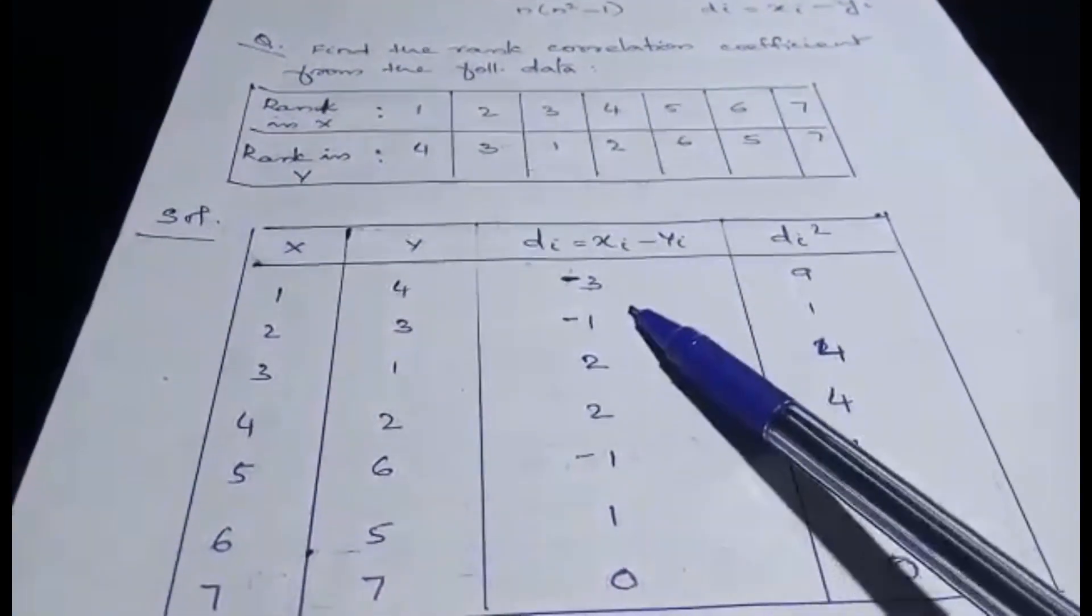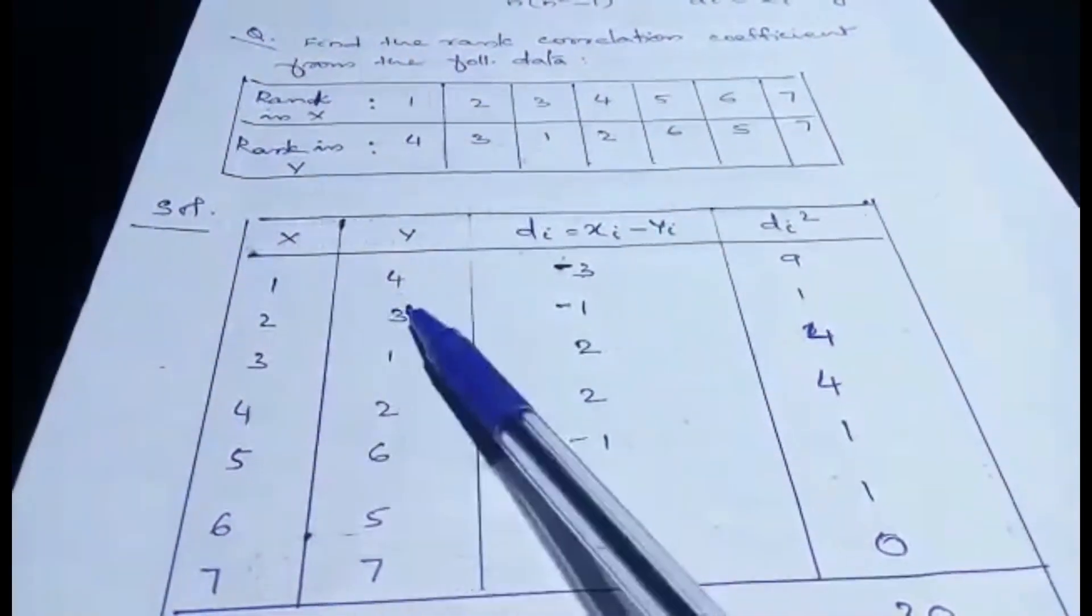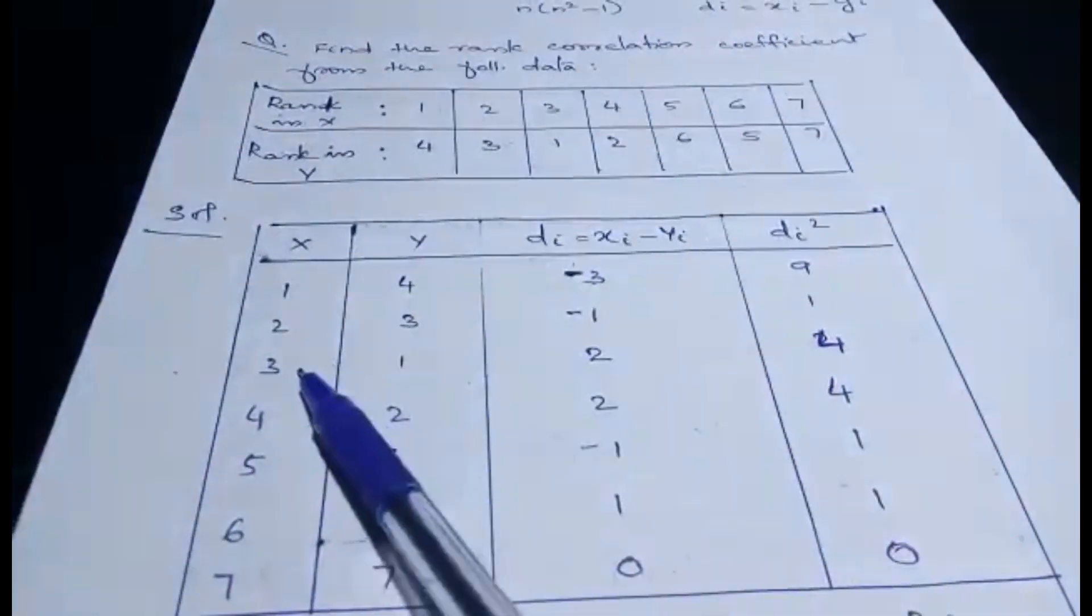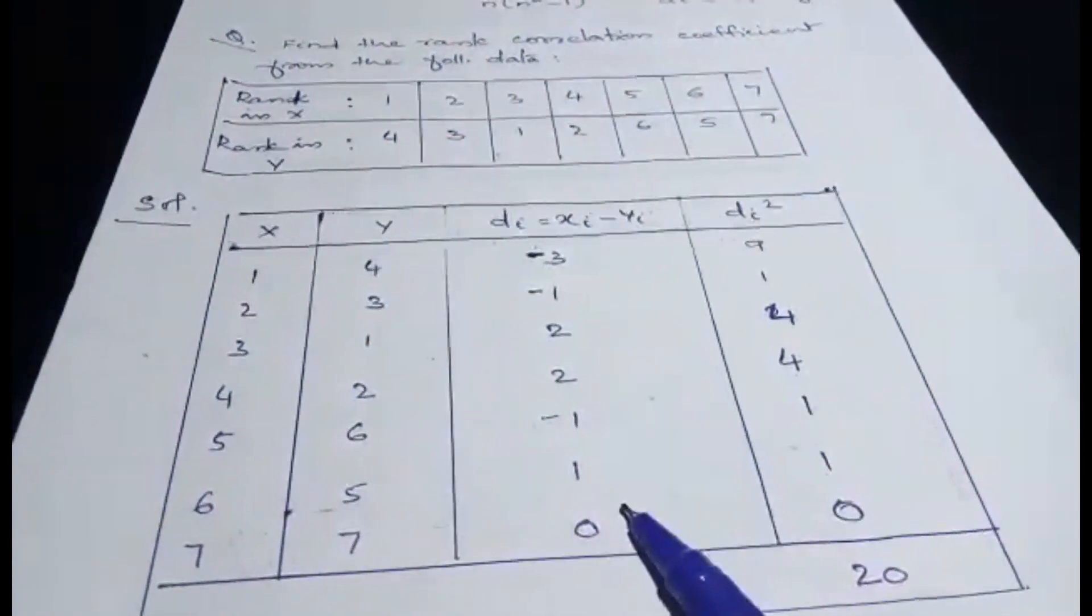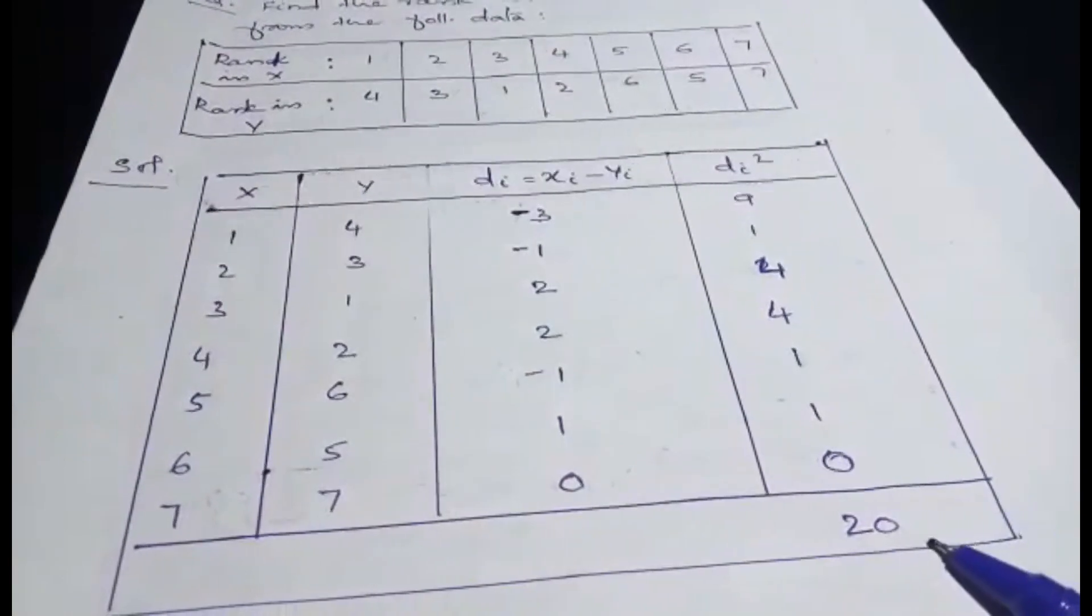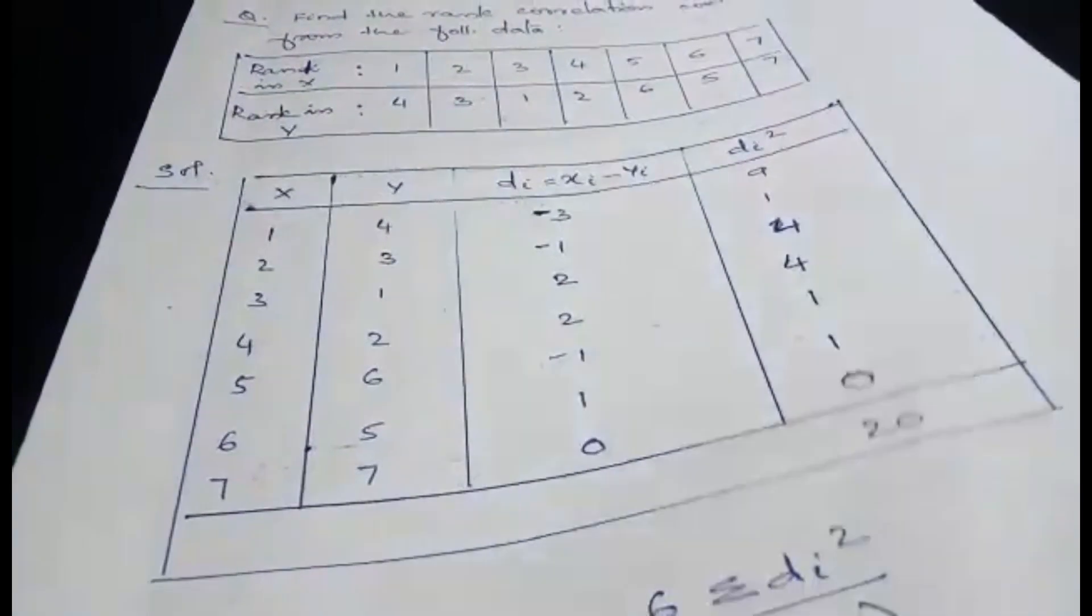That is xi minus yi: 1 minus 4 that is minus 3, 2 minus 3 that is minus 1, 6 minus 5 that is 1. This way you have to find and calculate di square, and find sigma di square, and that is 20.